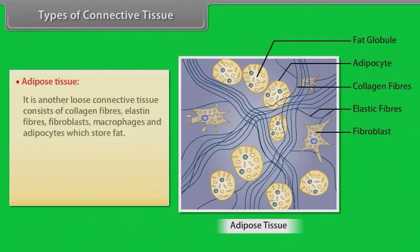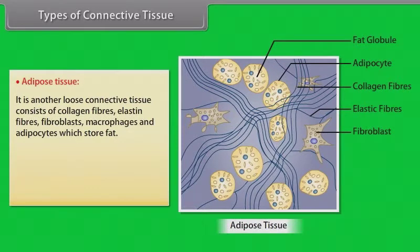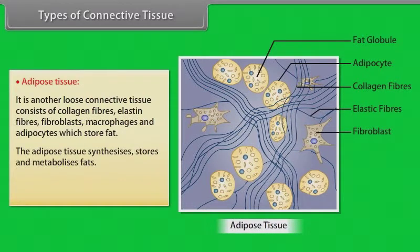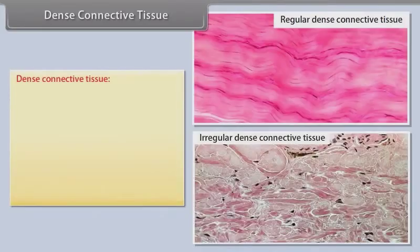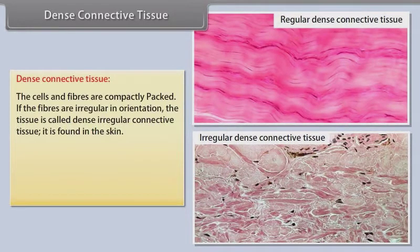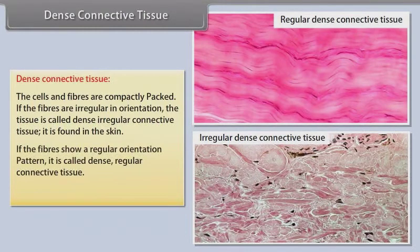Adipose tissue is another loose connective tissue consisting of collagen fibers, elastin fibers, fibroblasts, macrophages, and adipocytes which store fat. It prevents heat loss by forming an insulating layer beneath the skin. Dense connective tissue examples include tendon and ligament.